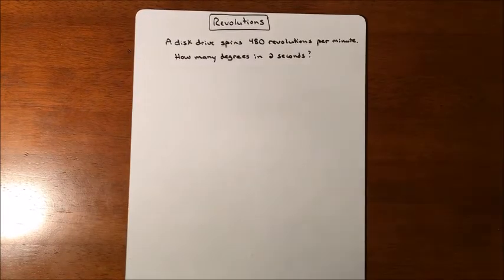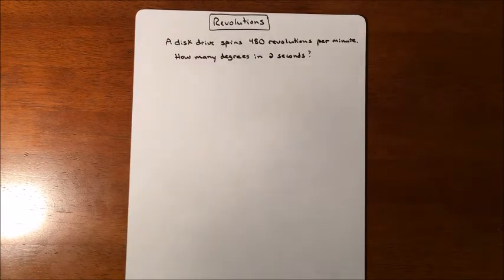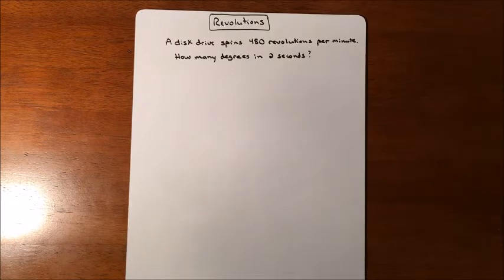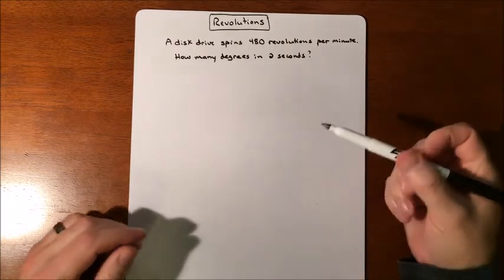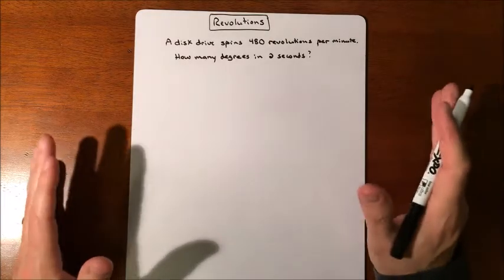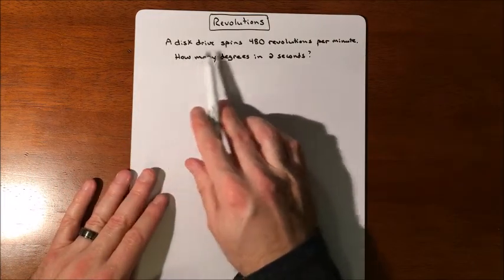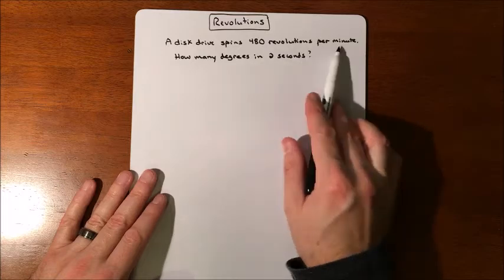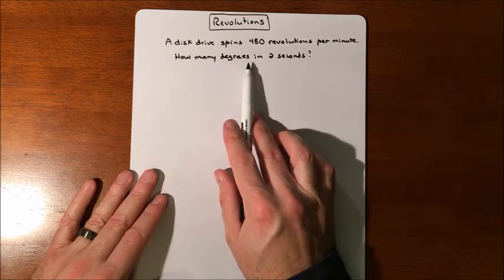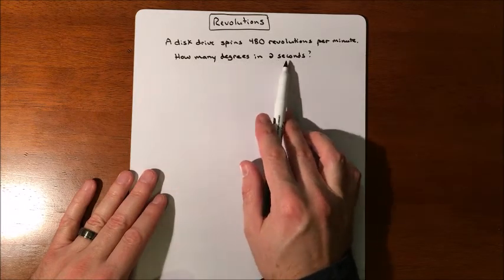In this lesson we're going to talk about one problem that revolves around revolutions. We're going to convert the idea of revolutions and turn it into how many degrees are happening in a certain period of time. So we have a disk drive that spins 480 revolutions per minute. How many degrees will elapse in two seconds?